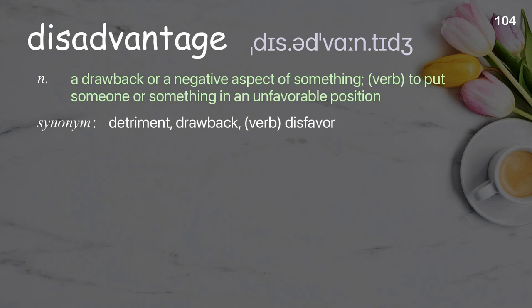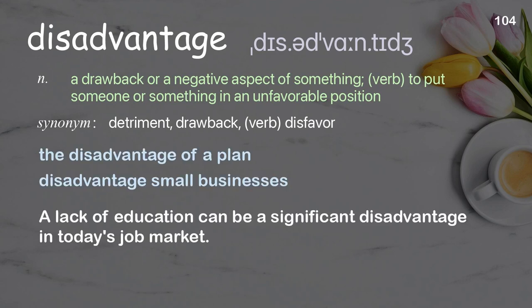Disadvantage: a drawback or a negative aspect of something; verb: to put someone or something in an unfavorable position. Examples: the disadvantage of a plan, disadvantage small businesses. A lack of education can be a significant disadvantage in today's job market.